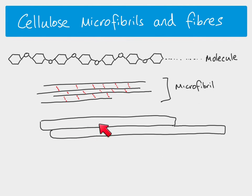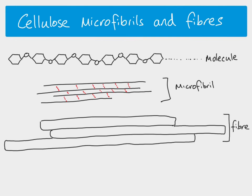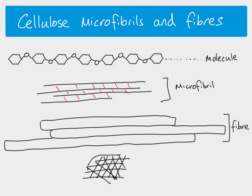If we put a few microfibrils next to each other, they together form what we call a fiber. So microfibrils arranged in parallel groups form a fiber. Those fibers then arrange themselves — for example in a cellulose cell wall — running at lots of different angles, crisscrossing over each other. Each fiber is made of many microfibrils, and each microfibril is made of 60 to 70 cellulose molecules, with lots of hydrogen bonding throughout.